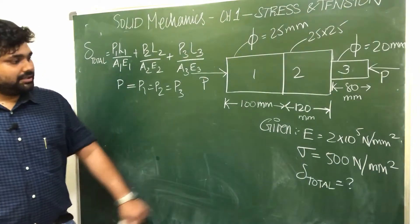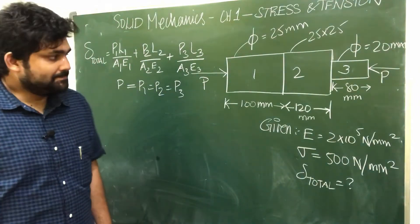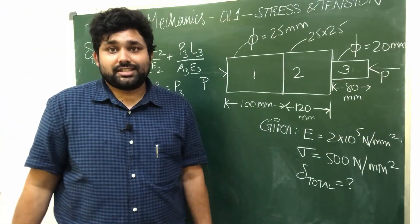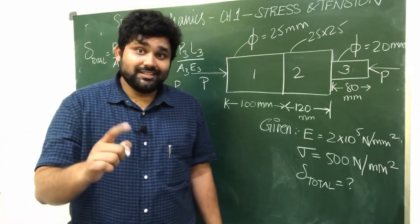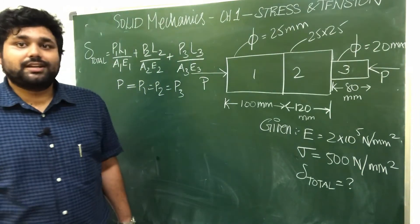This is the problem that we have to solve. P1 is equal to - this is a given value, so this is stress. Stress is equal to force by area of cross section, so this is the bar area of cross section.